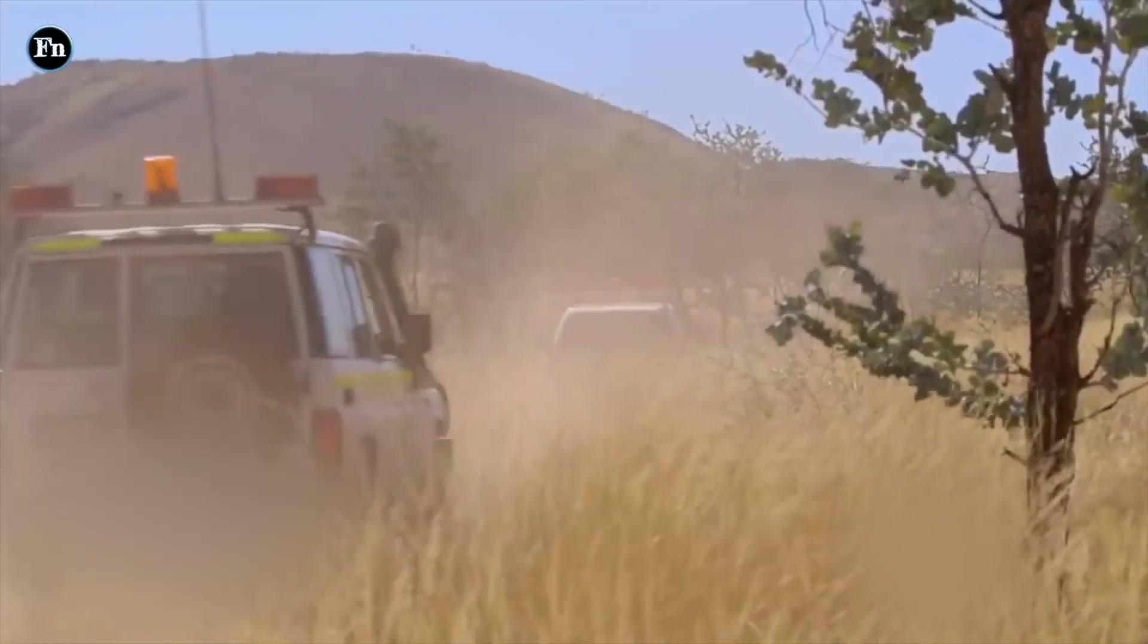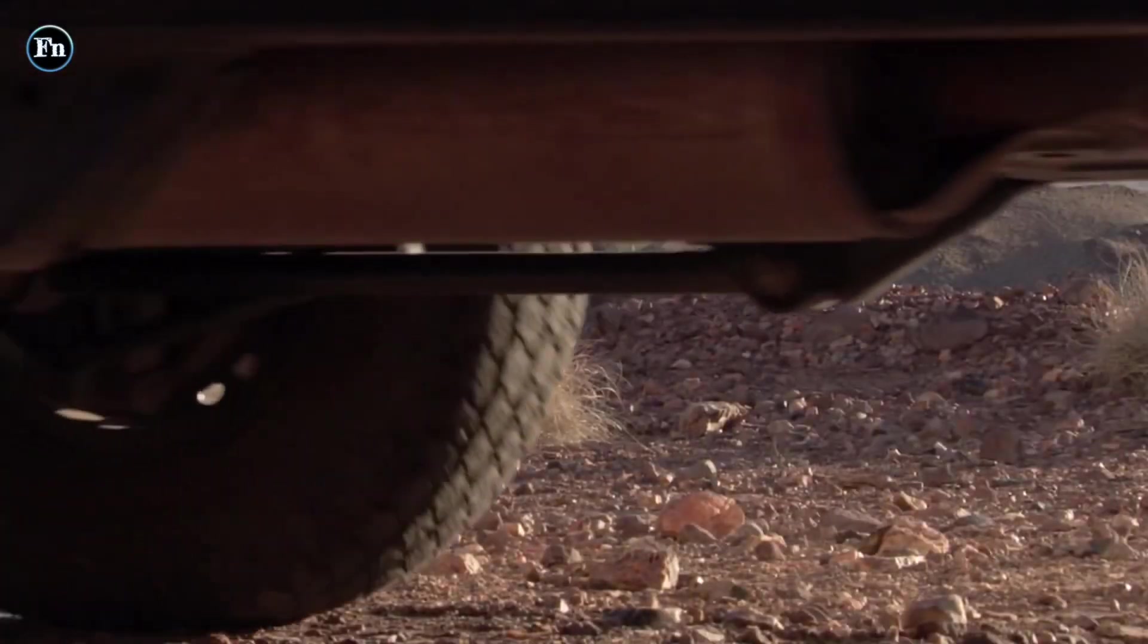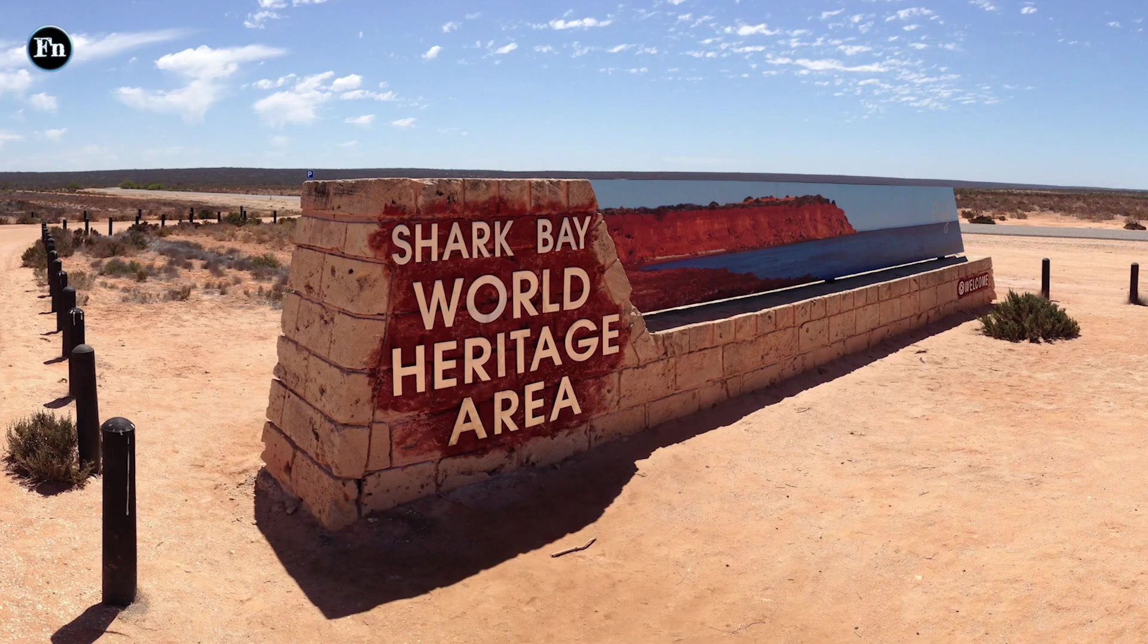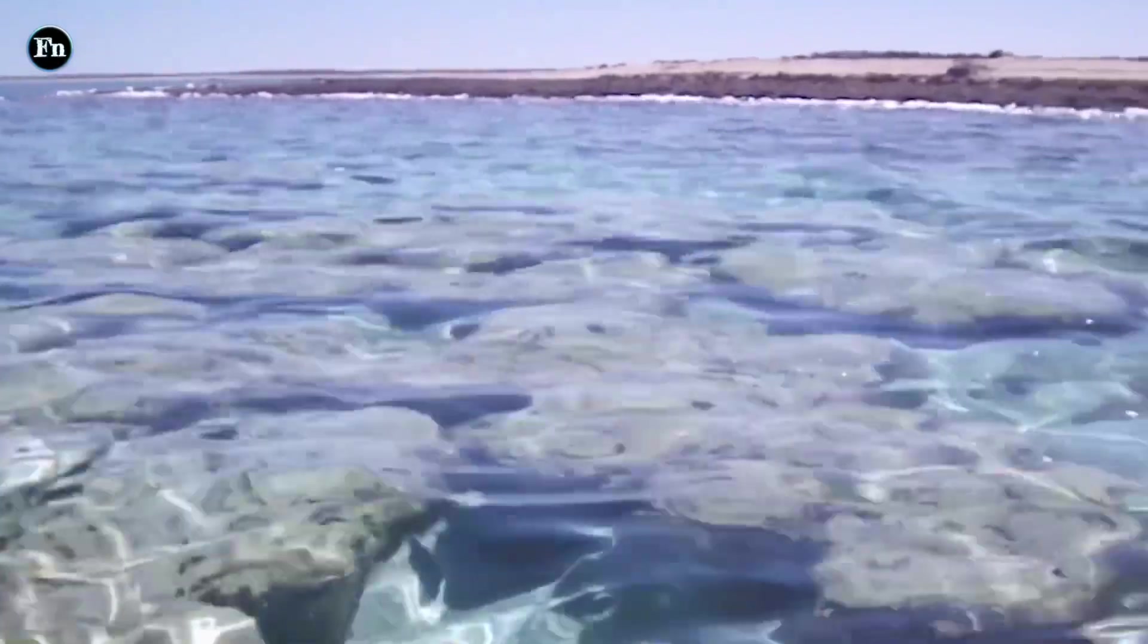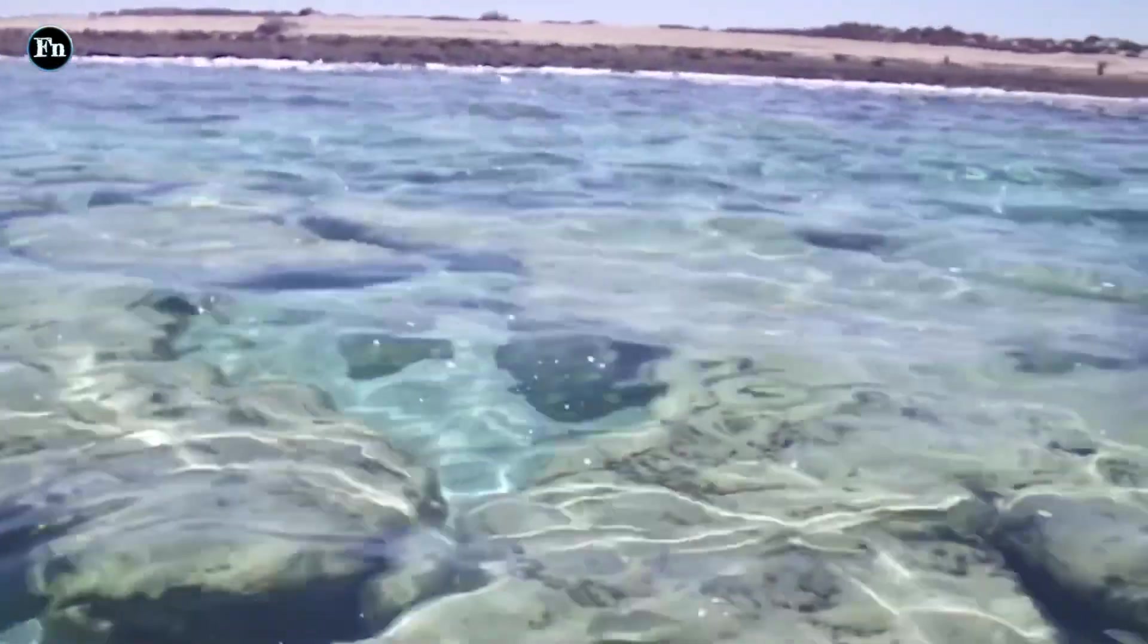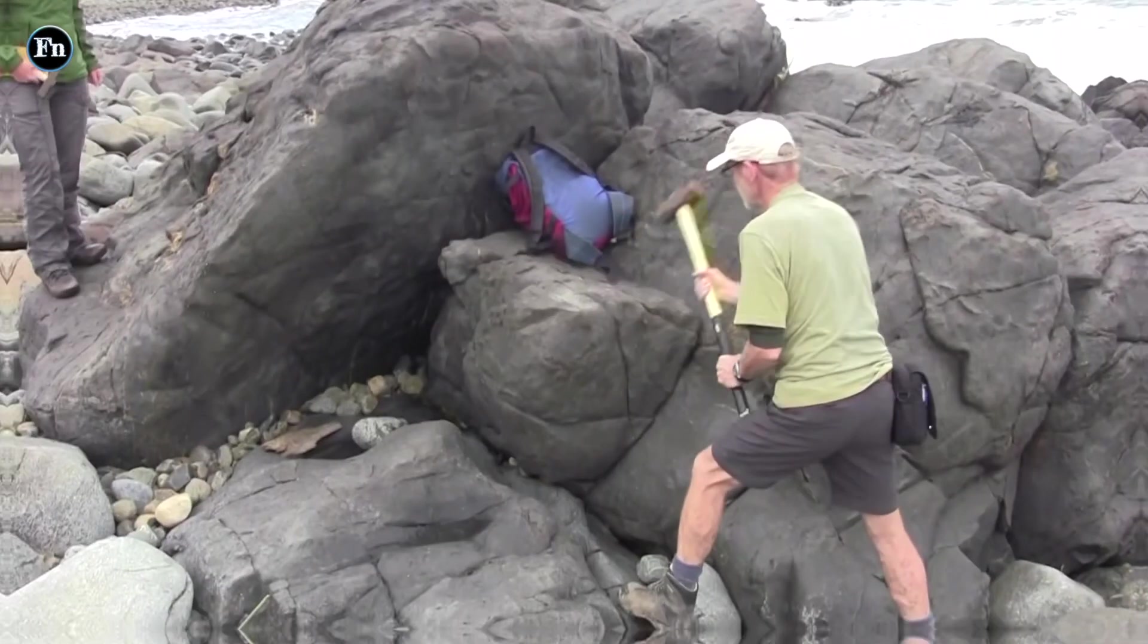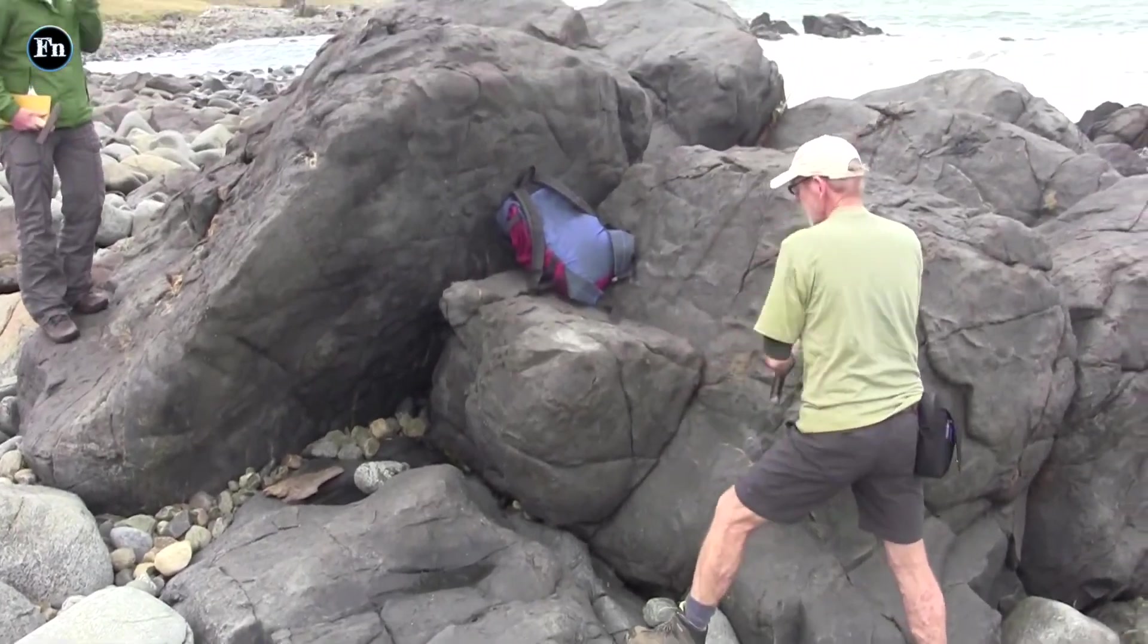These stromatolite mats are still present today even after so much time has elapsed in the World Heritage listed Shark Bay area of Western Australia. Cyanobacteria are still happily living just as they did billions of years ago. This gives rise to the idea that life must have appeared the moment the earth's climate and environment could support it.